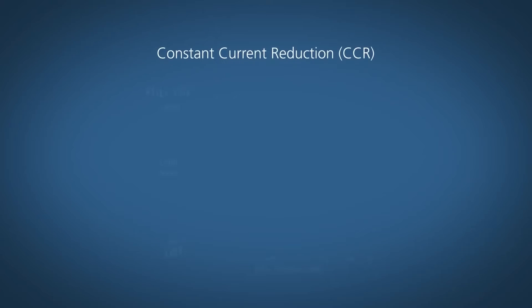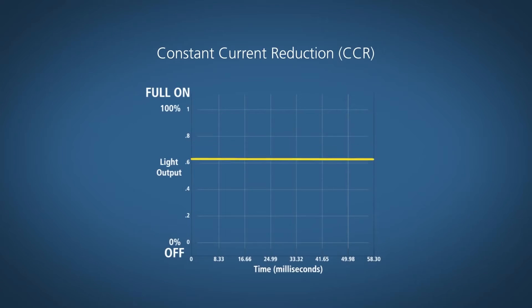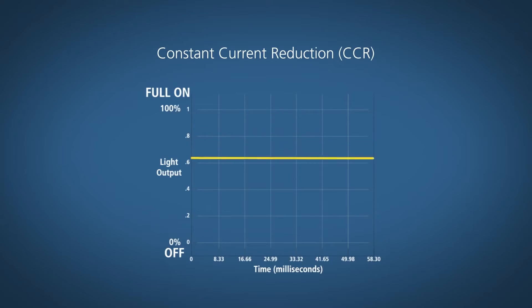Let's use an analogy of water in a garden hose to understand the difference between these two supplies. CCR is similar to adjusting the water flow in a garden hose with a faucet. As you turn the faucet, the water flow is uniformly adjusted down or upward. In a similar manner, a CCR dims an LED luminaire by uniformly adjusting the current upward or downward.